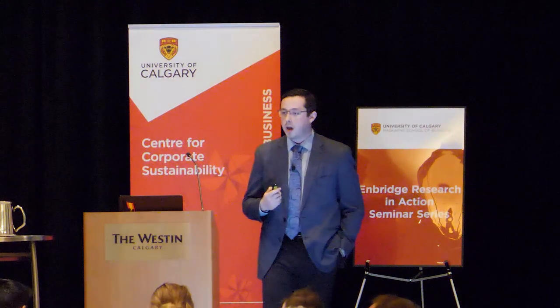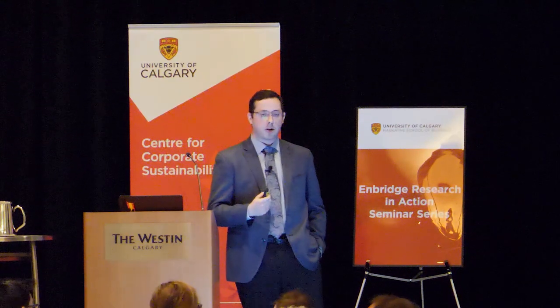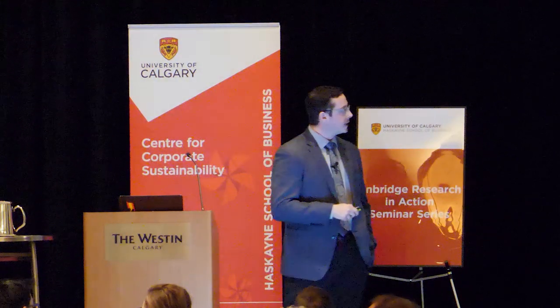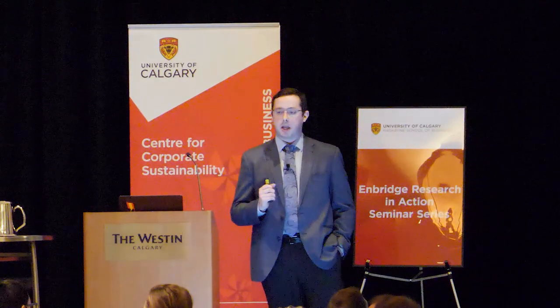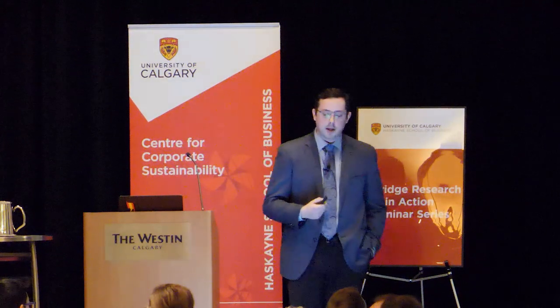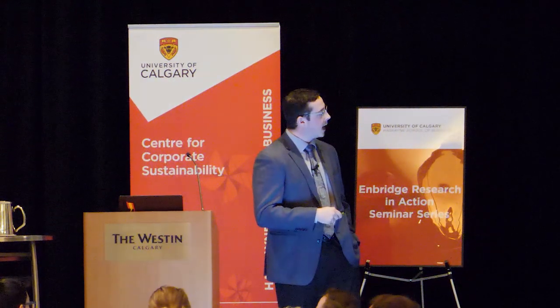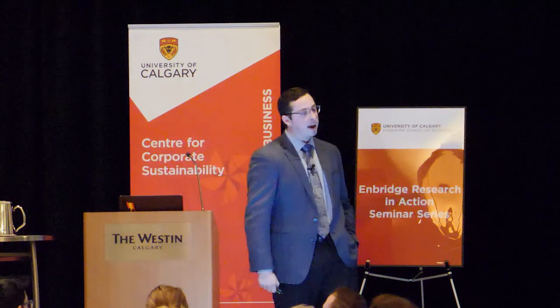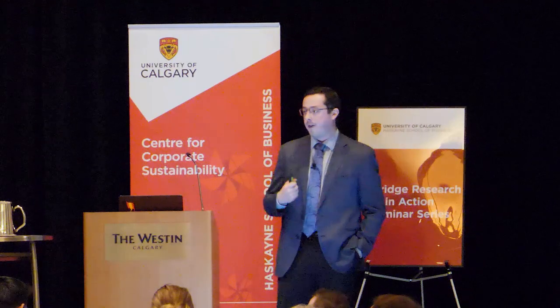To explain why we talk about WCS so much: roughly 65 percent of crude production in 2018 came from the oil sands — that's heavy crude. Another eight percent came from other heavy regions in Western Canada. So over 70 percent of production can be described by the WCS marker, which is the biggest reason why we focus on it — it affects the vast majority of production coming out of Western Canada.